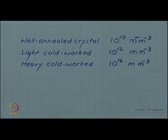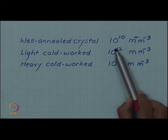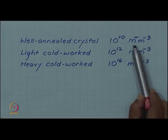Now let us look at how the dislocation density varies during various kinds of processes. In a well-annealed crystal, which has been heated above a certain temperature for a long time, the dislocation density comes down. You have a very low dislocation density, but still not close to zero, it is 10 to the power 10 per meter square or 10 to the power 10 meters per meter cube.